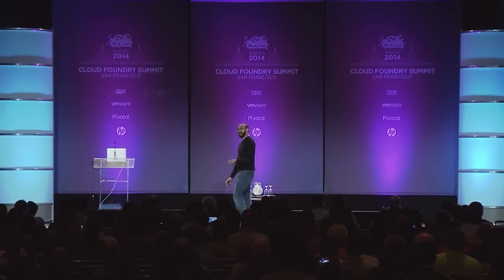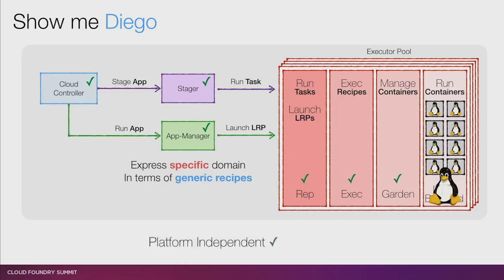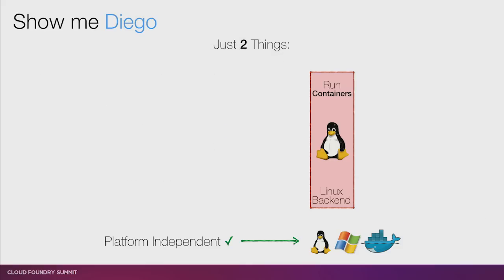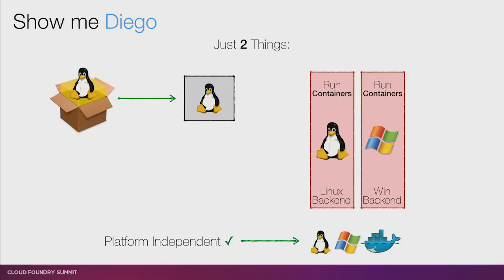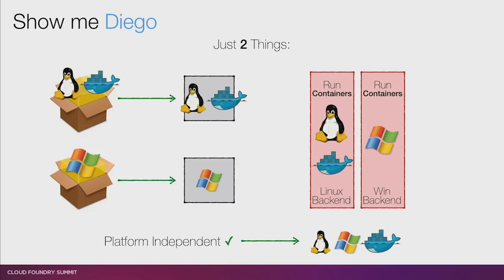That's domain specificity. Let's talk about platform specificity. Diego is built from the ground up to be platform-agnostic. Cloud Controller doesn't care what platform you're on — neither does the stager, app manager, rep, exec, or even Garden. We've put all the Linux-specific code where it belongs: in the backend. This makes it possible to support multi-platform pretty easily — you just need a Linux backend and, say, a Windows backend. Our friends at Iron Foundry are banging away at implementing the Windows version, and Docker fits right in too.